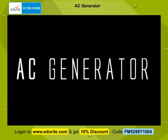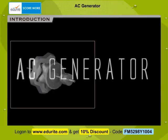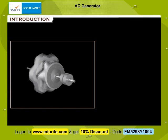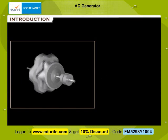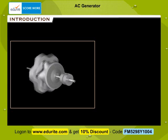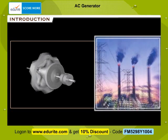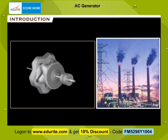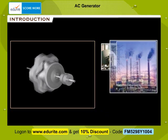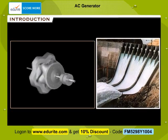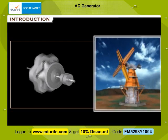AC Generator. Do you know that most of our electrical energy comes due to the spinning of rotors in the AC generator of power stations like nuclear power stations, thermal power stations, and hydroelectric power stations and so on?